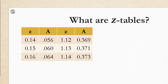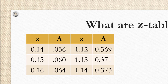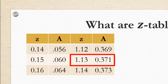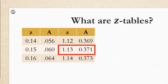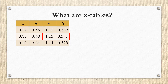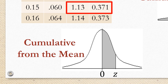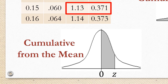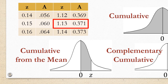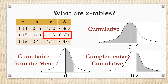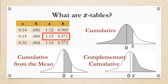So what are z-tables? All that a z-table is is a list of z-scores and the area associated with them. But what area? For example, if I tell you there's a z-score 1.13 and the area associated with it is 0.371, this is meaningless unless I know what area you're referring to. I might be using a cumulative z-table, which means the area I'm referring to is the area to the left of z. I might be using a z-table that's cumulative from the mean, meaning it's the area to the left of z up until zero — the z-score zero, which is the mean. Or I might be talking about a z-table that gives us the area to the right of a z-score, which is called complementary cumulative.